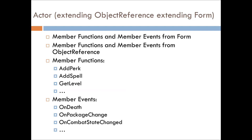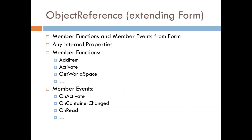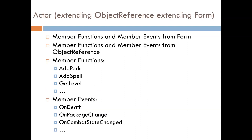That's important to know, because you can do GetGoldValue and GetFormID and all those calls on an Actor object, or OnUpdate, or OnUpdateGameTime. And with ObjectReference you can do OnActivate, OnContainerChanged — when thinking about items being added or removed. For Actor-specific functions, you have AddPerk, AddSpell, GetLevel, OnDeath, OnPackageChanged, OnCombatStateChanged.